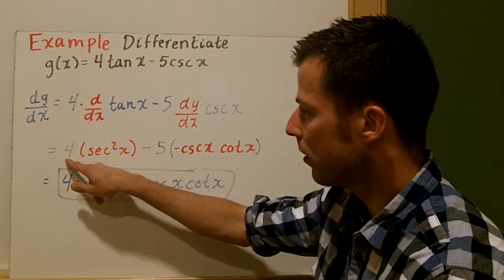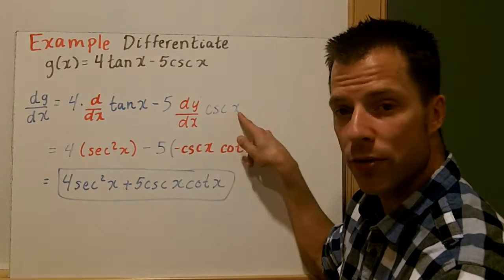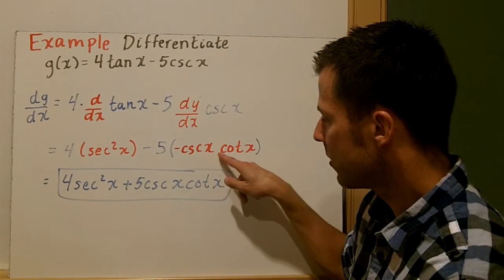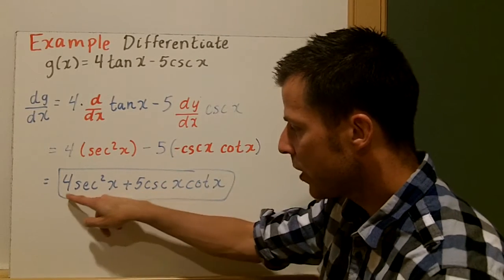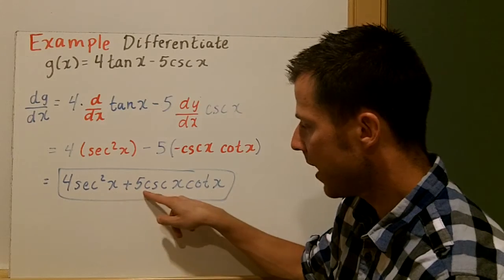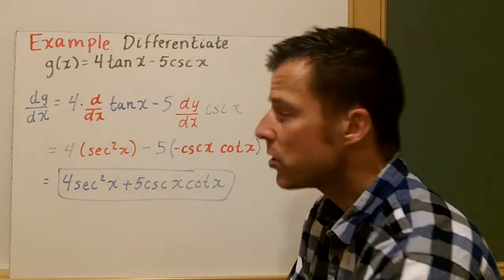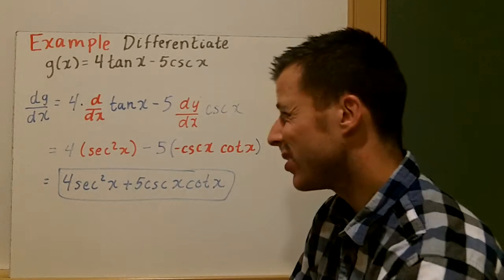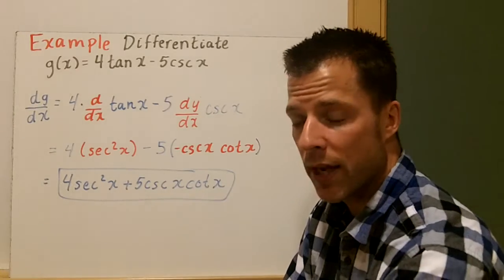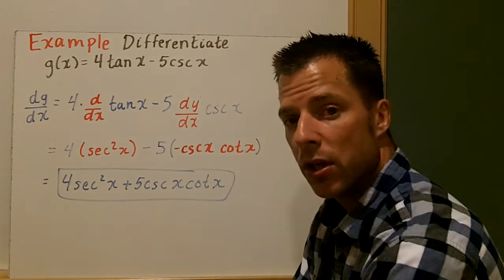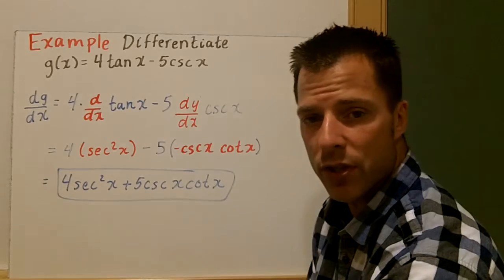The derivative of tangent of x is secant squared of x, minus 5 times the derivative of cosecant x, which is negative cosecant x cotangent x. With a little simplification — the subtraction and the negative make that positive — we get 4 secant squared x plus 5 cosecant x cotangent x. That's our derivative. If you had used the product rule, you would have gotten the same answer, just more work. Remember, we have a constant here, so just be careful — you don't always need the product and quotient rule.